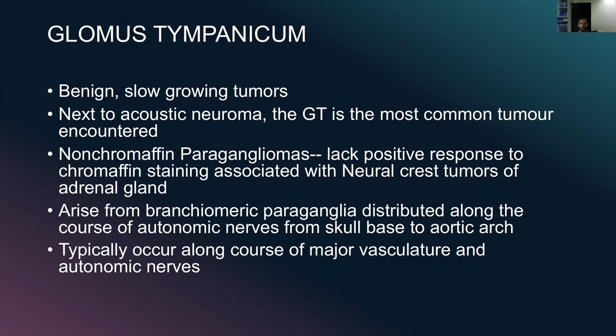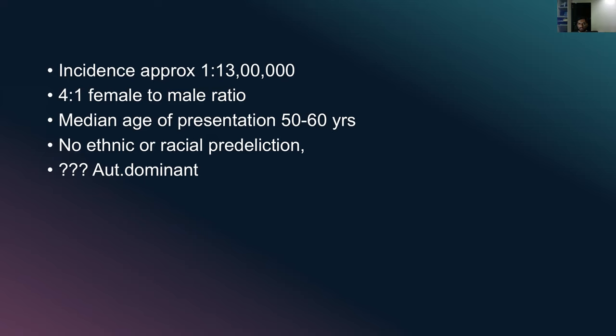Glomus tympanicum is a very commonly encountered temporal bone lesion. They are benign and slow growing tumors and after acoustic neuroma, glomus tympanicum is the most commonly encountered tumor. These are non-chromaffin paragangliomas - they lack a positive response to chromaffin staining associated with neural crest tumors of the adrenal gland. They arise from branchiomeric paraganglia distributed along the course of the autonomic nerves from the skull base to the aortic arch. Incidence is approximately 1 in 1.3 lakh with a female preponderance of 4:1 ratio and median age of presentation is 50 to 60 years with no ethnic predilection.